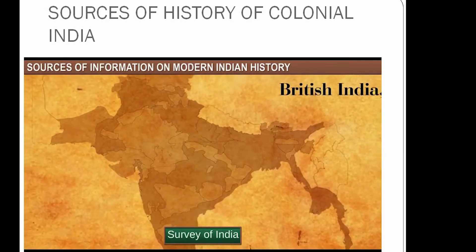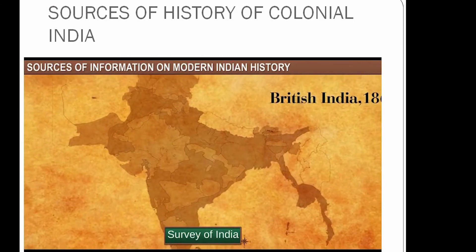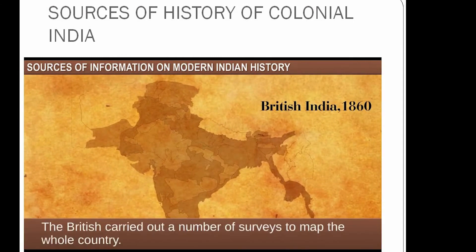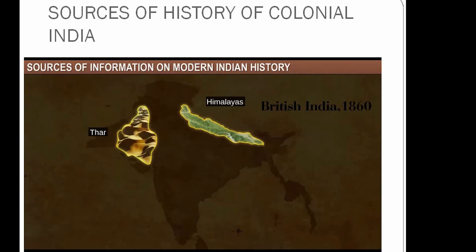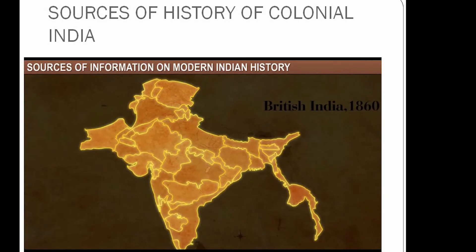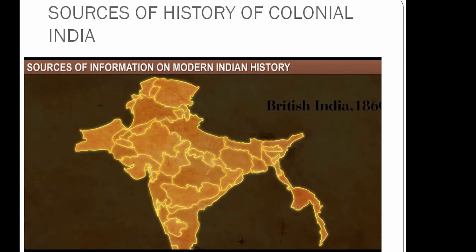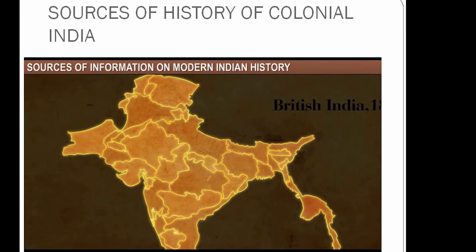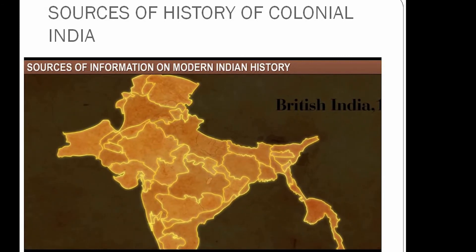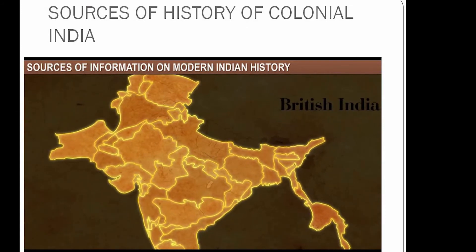The British carried out a number of surveys in the early 19th century. This helped to understand the topography of a region, such as the flora and fauna, cropping patterns, soil quality, and local history of the place. By the end of the 19th century, censuses of all the Indian provinces were being carried out every 10 years. This helped to collect information on the religion, caste, and occupation of the people.